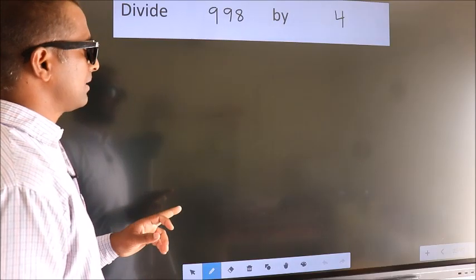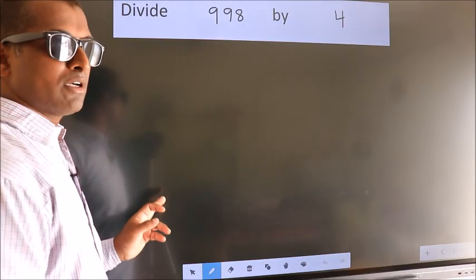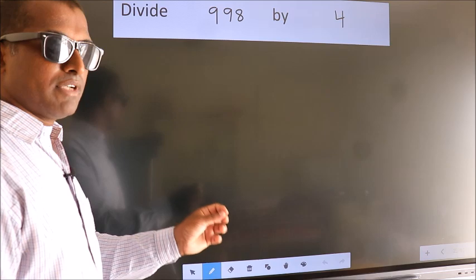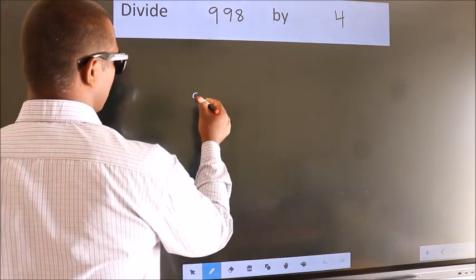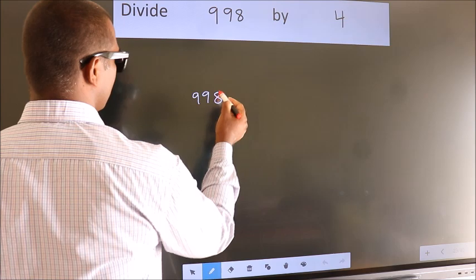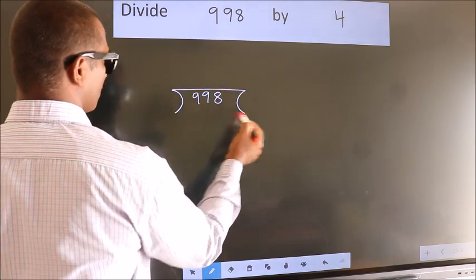Divide 998 by 4. To do this division, we should frame it in this way. 998 here, 4 here.